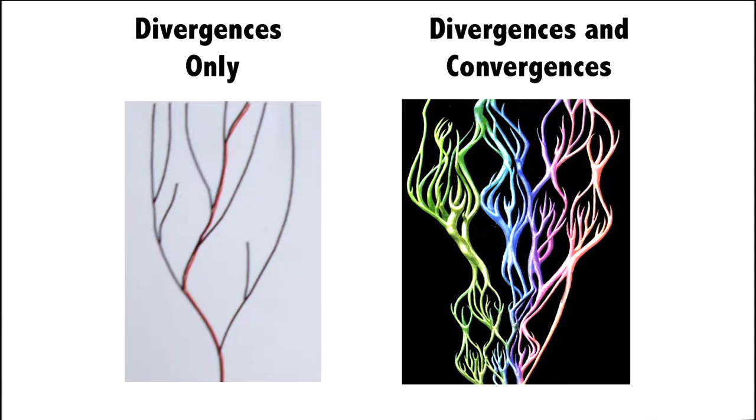Now, on the tree on the left, we have divergences only. We have two lines coming from one line. But on the tree on the right, we have divergences and convergences. Convergences is when two formally independent lines come together and merge into a single organism or even a single ecosystem, depending on how you want to talk about the units of evolution.